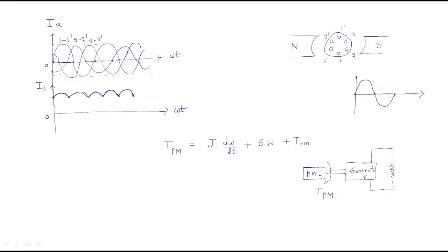So we can understand how the generator is working. We connect a prime mover; that prime mover rotates the generator rotor and it generates some EMF. The generated EMF supplies current to the load resistor. If we analyze some parameters here, the given power from the prime mover torque — the given prime mover torque is equal to J times d-omega/dt plus b times omega, plus the electromagnetic torque.